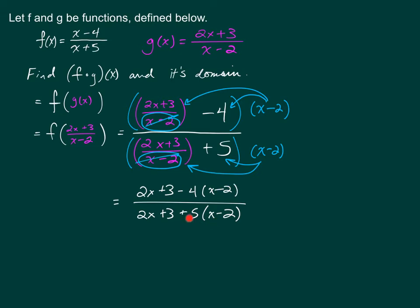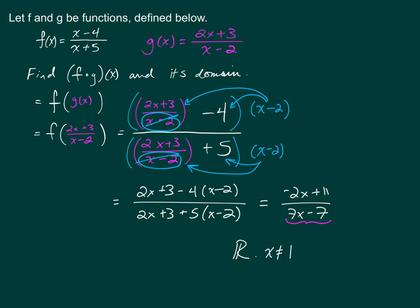When you distribute the negative 4 in the top and the 5 in the bottom and collect like terms, you end up with negative 2x plus 11 over 7x minus 7. Just looking at this denominator, we have to check where it equals 0 — because we're asked to find f composed g of x and its domain. When you set this denominator equal to 0 and solve for x, you'll see that part of the domain restriction is x cannot equal 1.